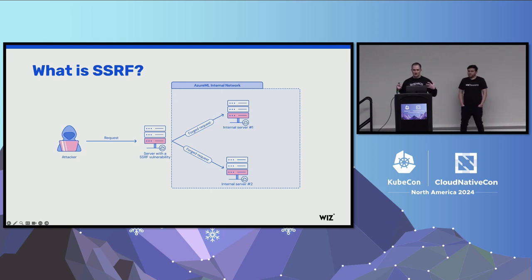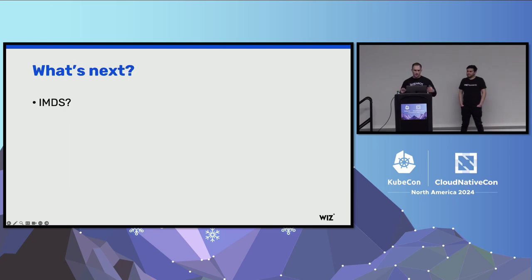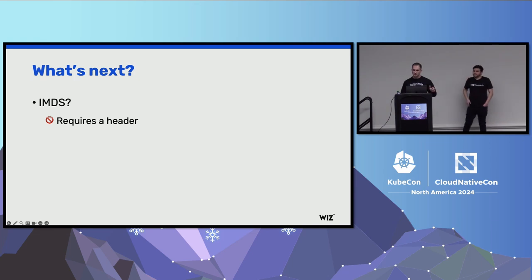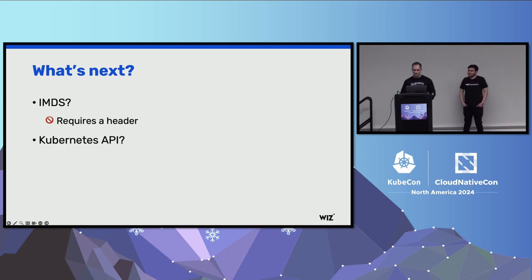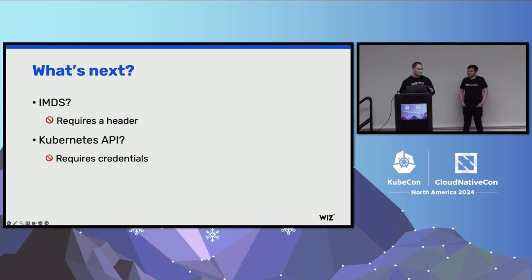So what's next? We have the ability to send arbitrary HTTP requests and get the response. We first thought about communicating with the IMDS — maybe we could get the machine's token and laterally move from there. But unfortunately, the Azure IMDS server requires a special header, and we don't control the request headers. We also figured that we are probably in some sort of a Kubernetes environment and should contact the Kubernetes API, but while we were able to communicate with it, we lacked the required credentials. At this point we were quite desperate — we had this amazing ability to send arbitrary requests, but couldn't know where to direct them.